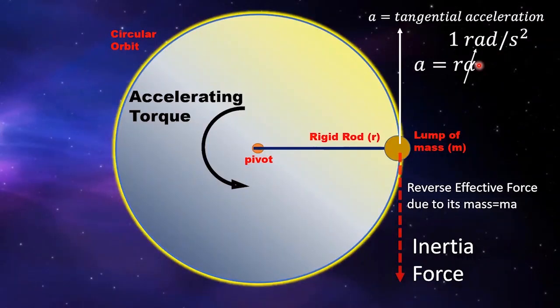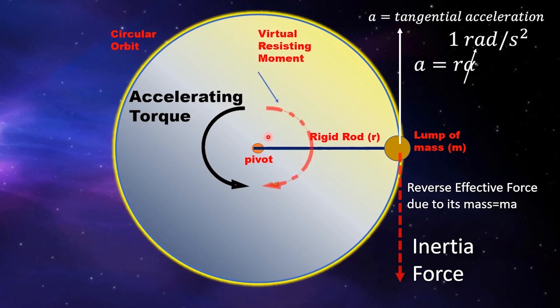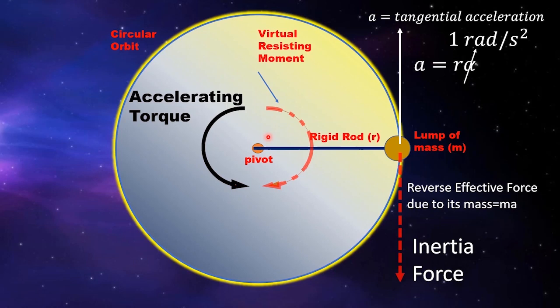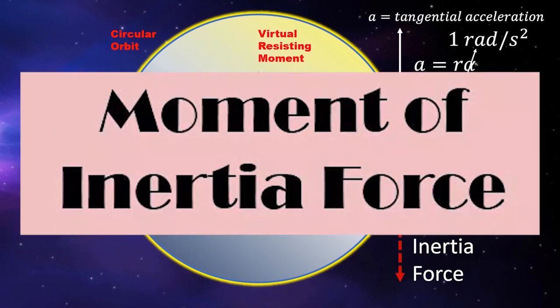Going back to the free body diagram, we know that if a force is applied at a certain perpendicular distance from a point, it will produce a torque or moment about that point. By this principle, the inertia force will produce a moment about the pivot point, which we perceive as a virtual resisting moment whenever we try to spin or rotate things — especially heavy objects, like trying to roll a heavy wheel of a truck.